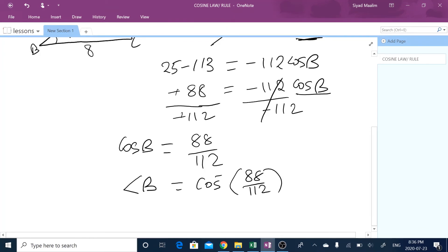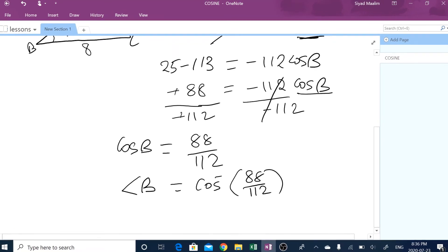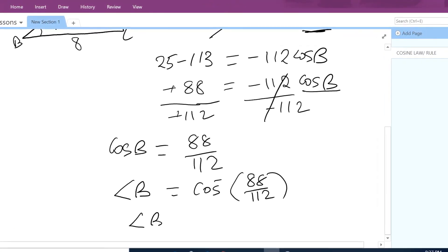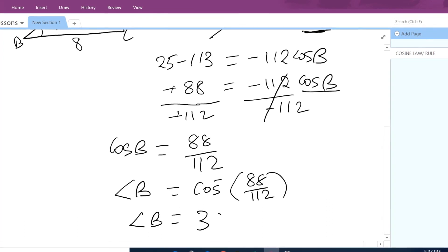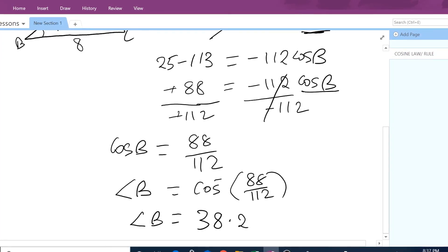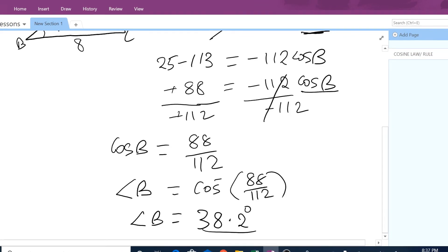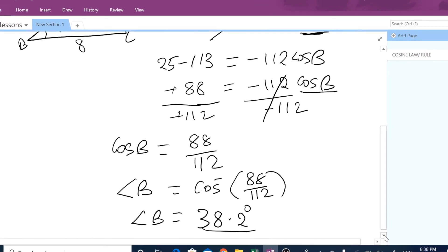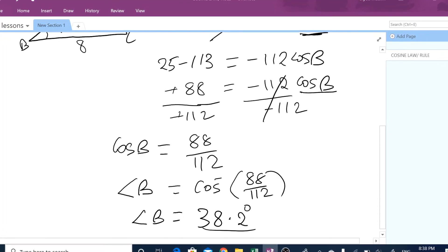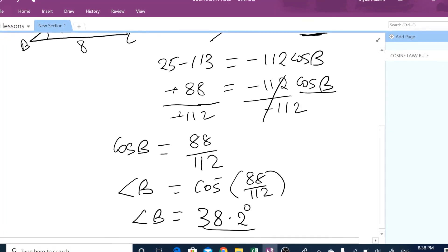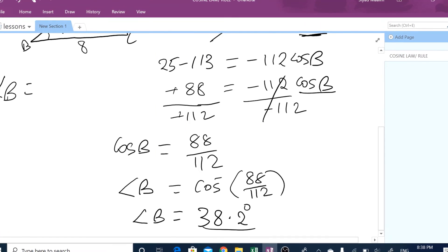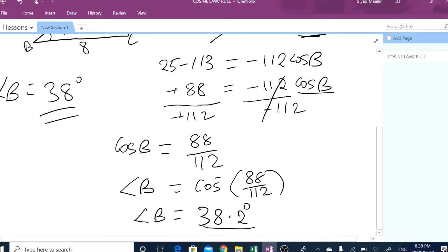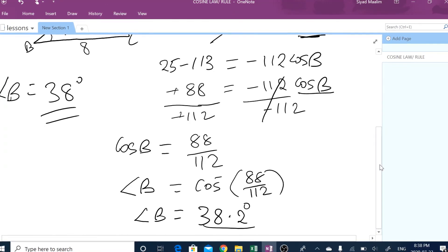So for you to find angle B, what you have to do is cos inverse of 88 divided by 112. Use your calculator to find this. Let me do that on my end. So angle B equals roughly 38.2 degrees. So angle B is roughly, let's just say, 38 degrees.